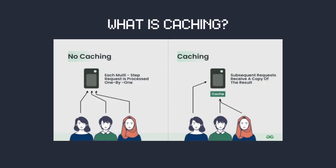What is caching? Caching is a technique used in computer science and software development to store and use previously computed or fetched data. The purpose of caching is to accelerate subsequent requests for the same data by serving the stored copy instead of recalculating or refetching it. This helps reduce latency, improve response time, and optimize the performance of applications.